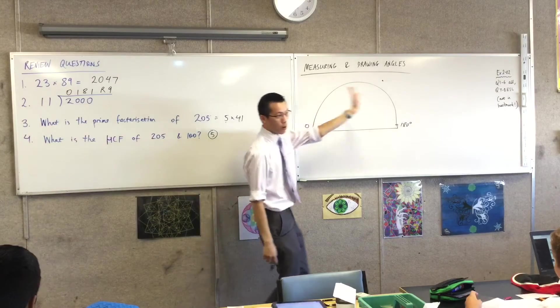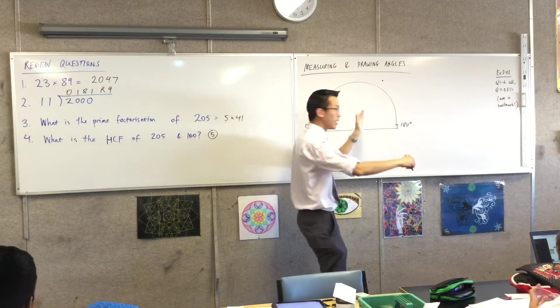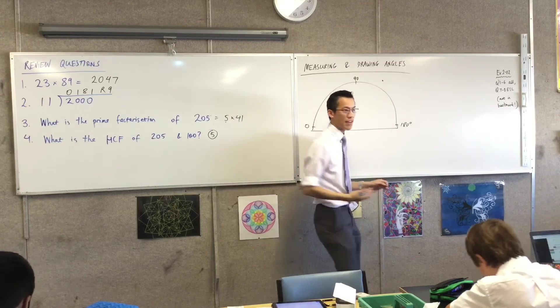Now, because you've got zero over here, 180 in there, what's right in the middle? Do you see it there? What's right in the middle? It's 90. It's 90. That's an important angle, so you want to—I'll probably write that in as well.